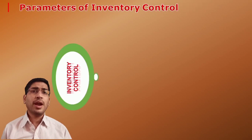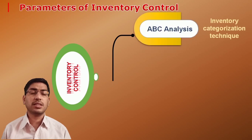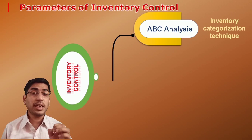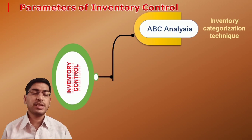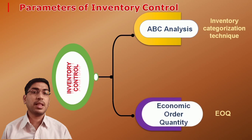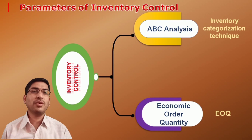Now let us talk about the parameters of inventory control. There are 2 types of inventory control models. The first one is ABC analysis — an inventory categorization technique that categorizes inventory into 3 types: Inventory A, Inventory B, and Inventory C. The second one is EOQ, which stands for economic order quantity — exactly what size of an order to procure for finance purposes, that is, how much size do we need to give for procuring material. That is nothing but the economic order quantity.